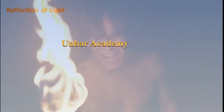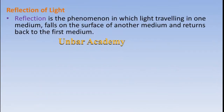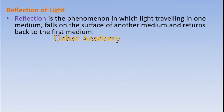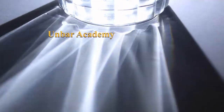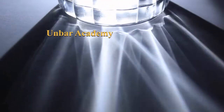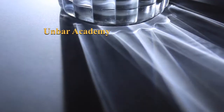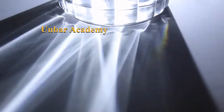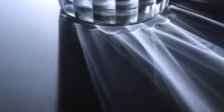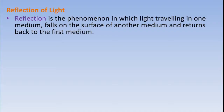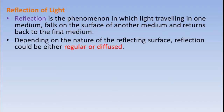Reflection of light: reflection is a phenomenon in which light traveling in one medium falls on the surface of another medium and returns back to the first medium. Depending on the nature of the reflecting surface, reflection could be either regular or diffused.